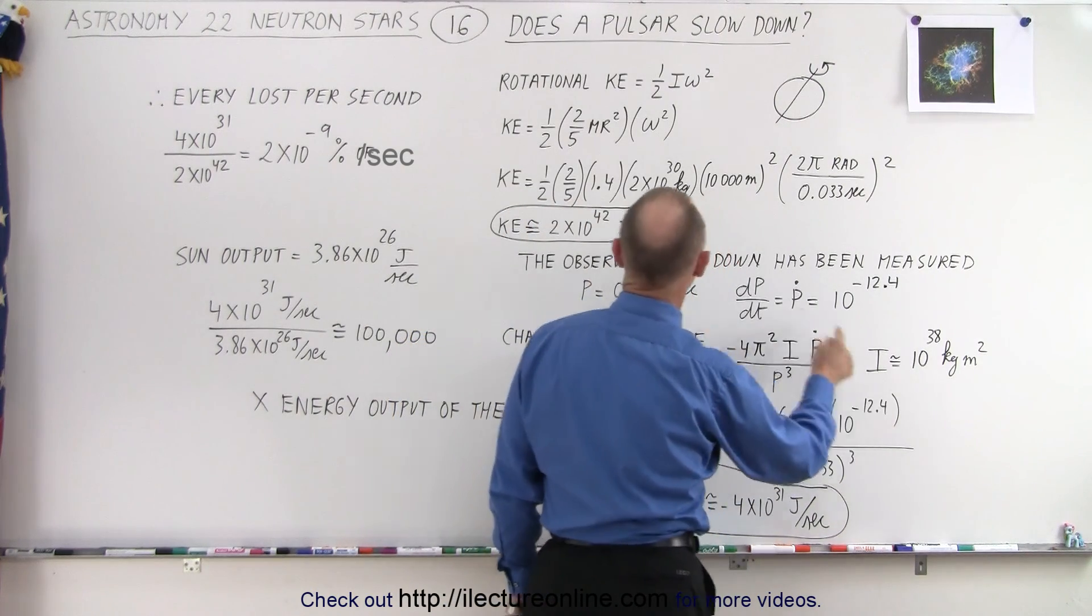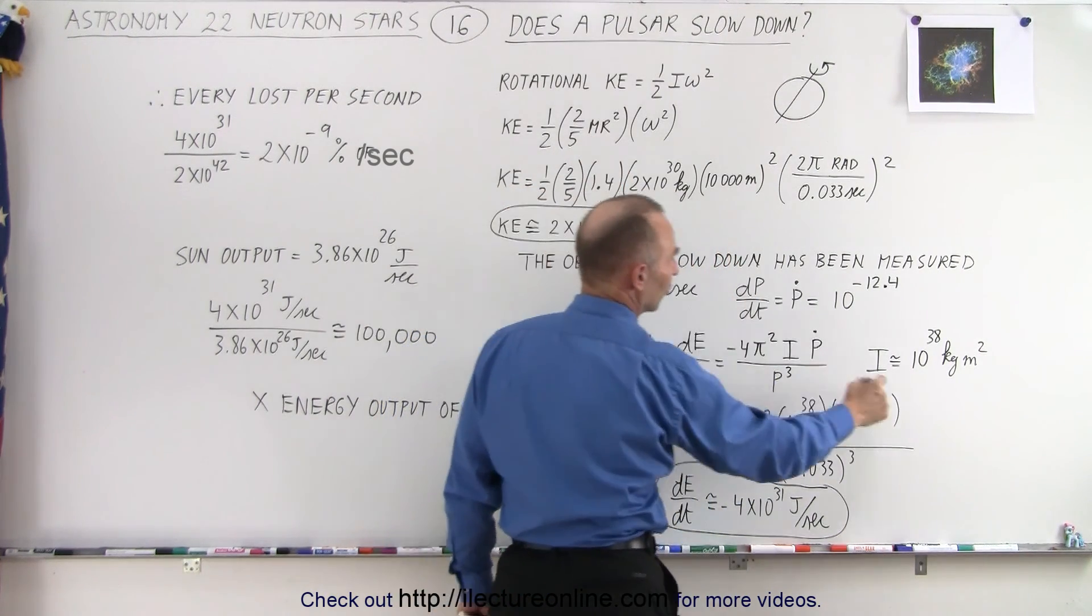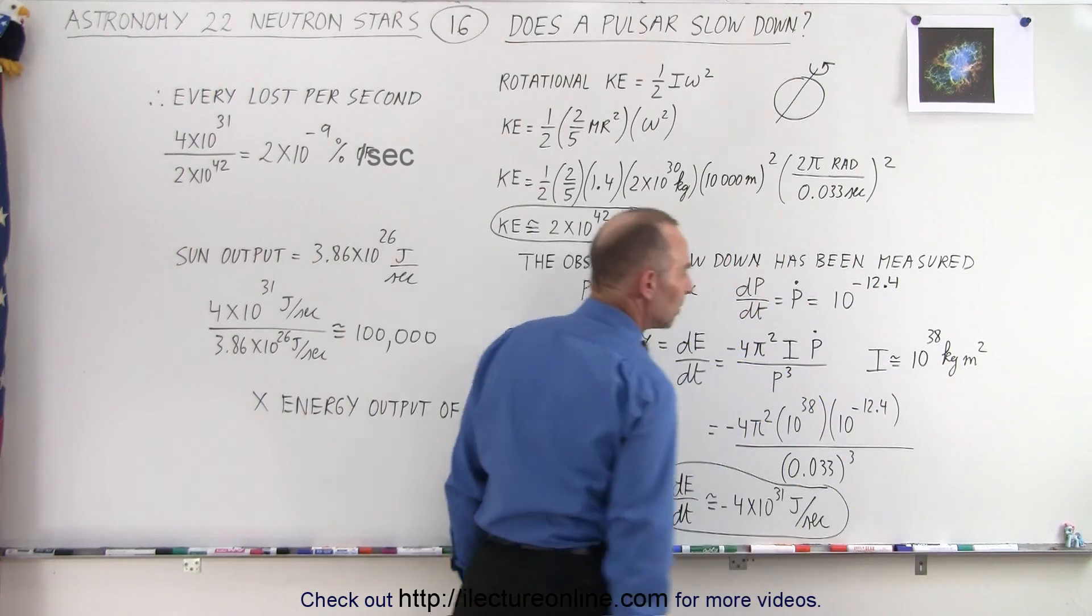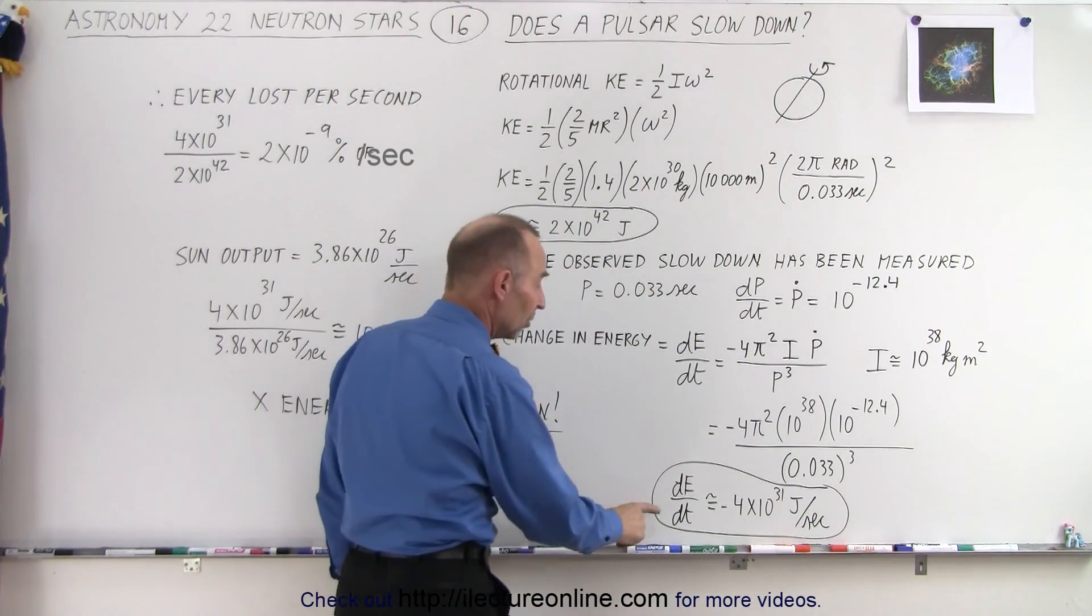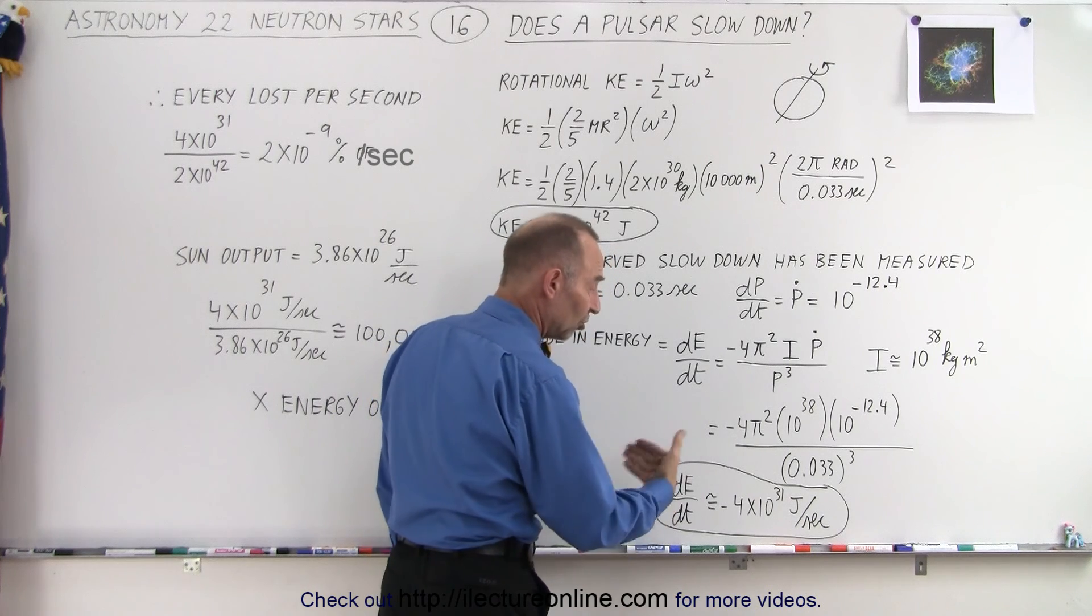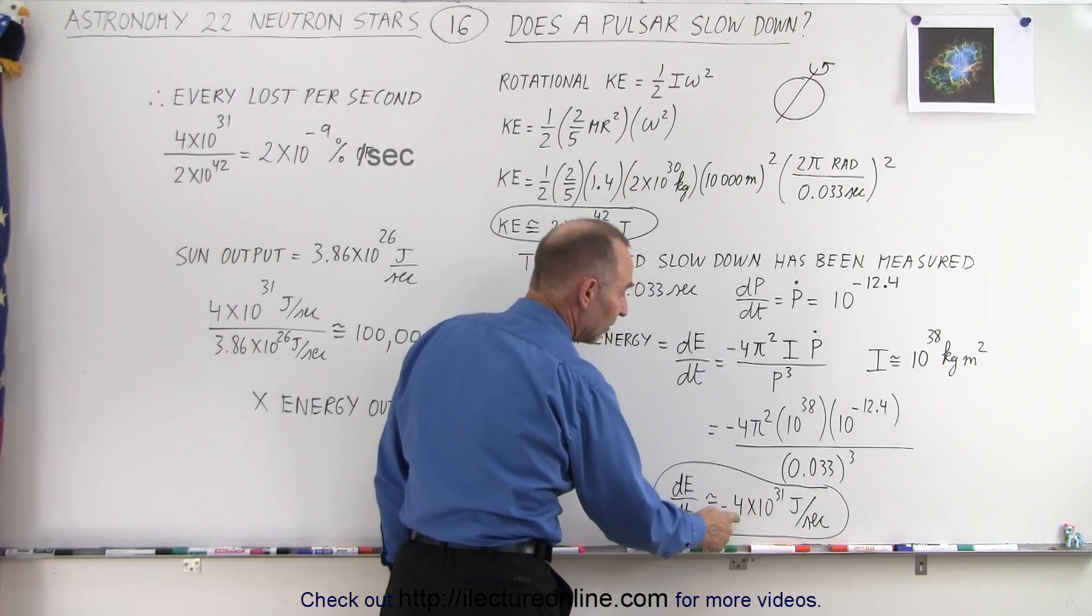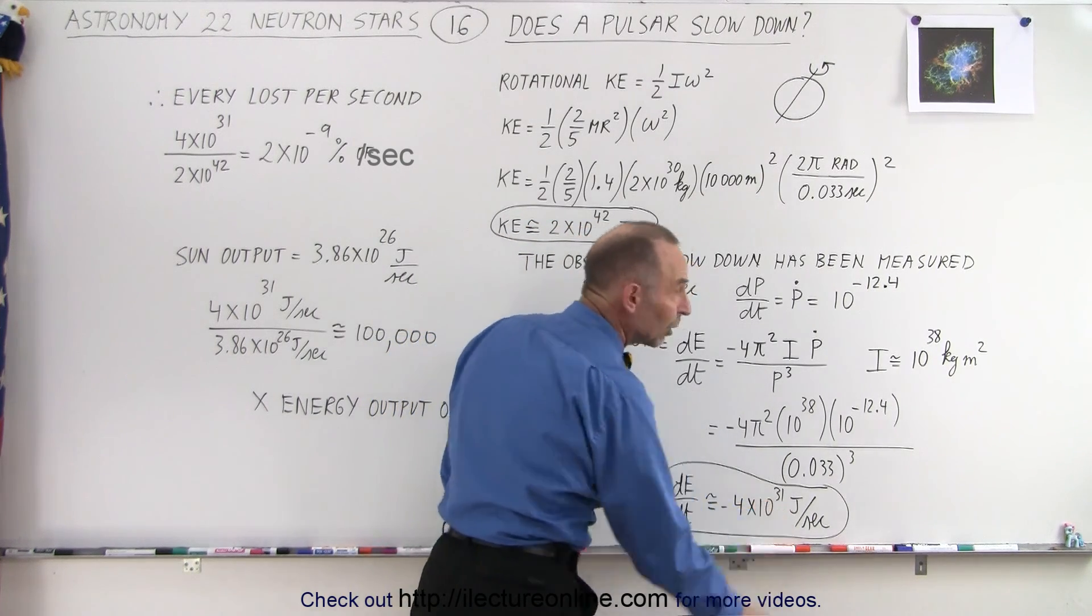Knowing that the moment of inertia, when we take two-fifths MR squared, is about 10 to the 38 kilograms meter squared, plug that all in there, we get a change in the energy per unit time. That's a change in energy per second of 4 times 10 to the 31 joules.